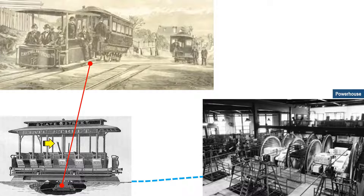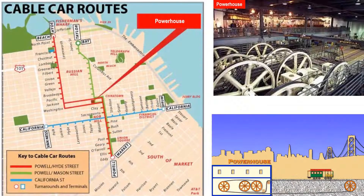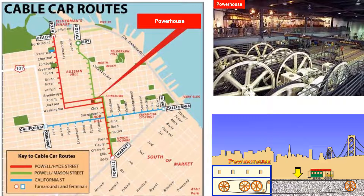A lever controls the clamping and unclamping of the grip. The cable is continuously rotated around a fixed route by engines in the powerhouse, which contains the propulsion and other machineries of the system. There are three routes preserved up to the present for touristic purposes — the red, green, and blue lines on this map. The machineries have been preserved in their original form in the original powerhouse, where the underground cables below the road are circulated by the wheels. The powerhouse now contains a museum and other amenities.